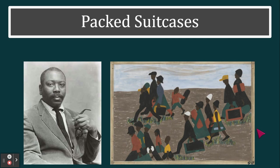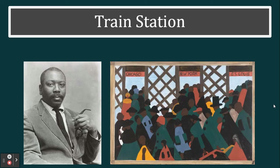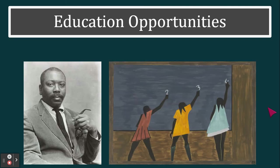Jacob Lawrence also painted families packing their suitcases and migrating in small family units — one person has a baby, children are walking with their belongings. He shows how they're migrating to the north, with birds migrating alongside them and children carrying bags. He has a famous painting of a train station showing people shuffling to board the train to Chicago, the train to New York, and the train to St. Louis.